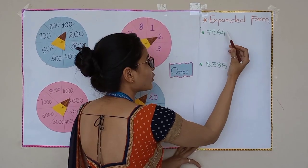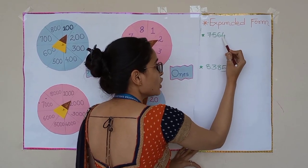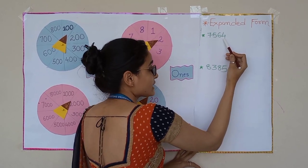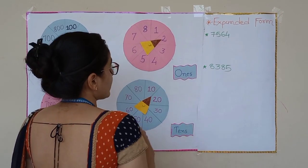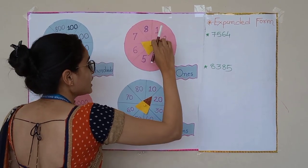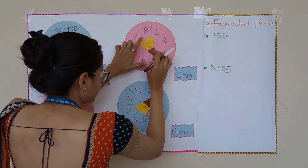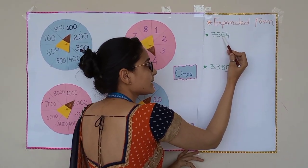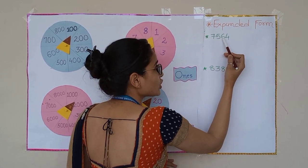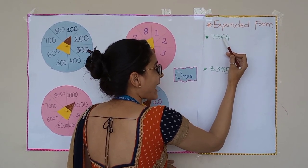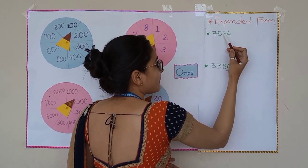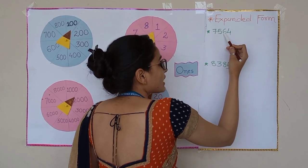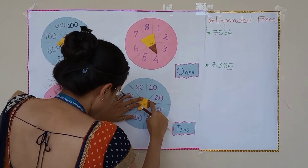Now you will tell me the place value of four. As you know, four is at the ones place, so the place value of four is four. Now I will rotate my wheel to four. Next digit is six — tell me its place value. As you know, six is at the tens place, so the place value of six is 60. Now I will rotate my wheel to 60.